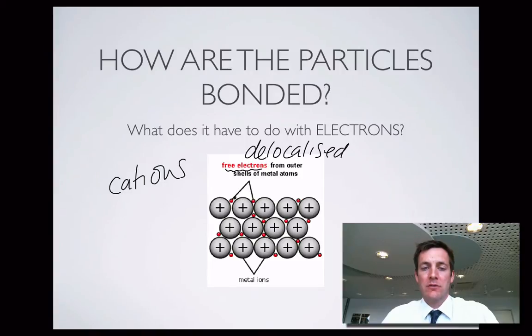And clearly if you've got electrons moving around or between these positive charges and the negative electrons attract positive charges then they're going to act as a kind of glue in between those positive ions. So this is often described as metal ions floating in a sea of delocalised electrons. And it's the attraction between those electrons and those positive ions that gives the metal structure its strength.